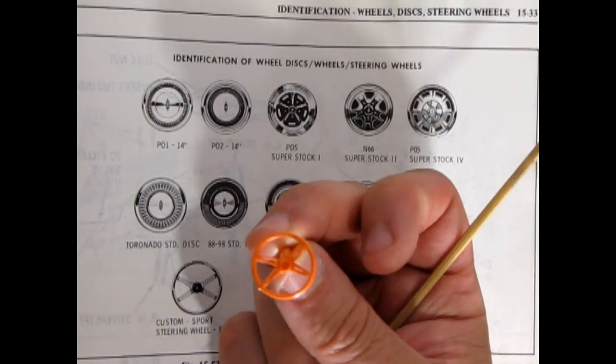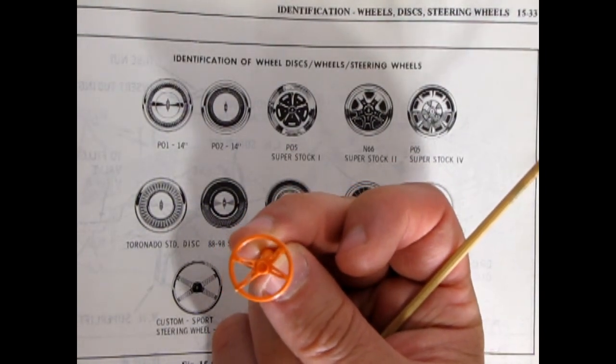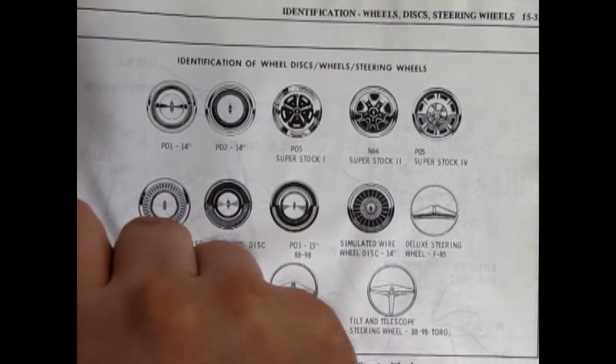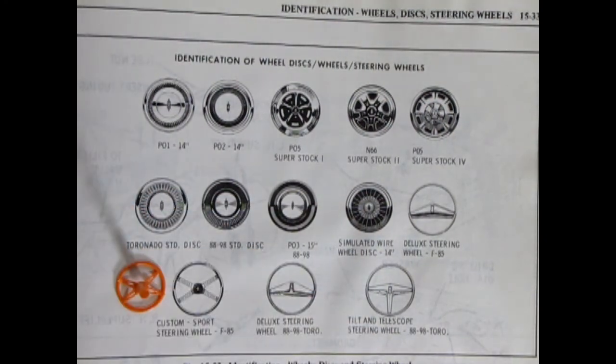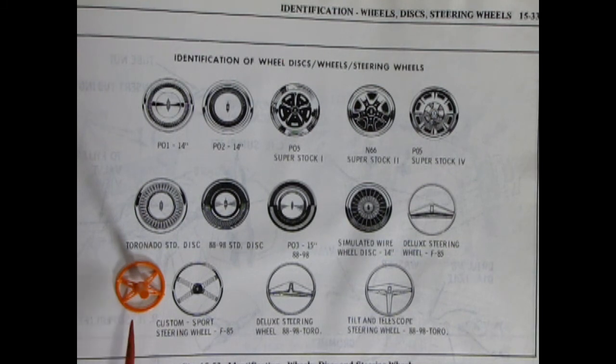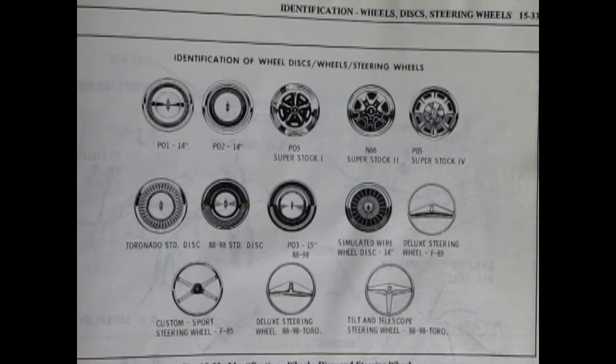What we see here is the custom sport steering wheel for the F85 which would of course also be the 442. There's our Johan example. You can see. Well let's put it this way. There we go. You can see that this is accurate to this sport steering wheel.